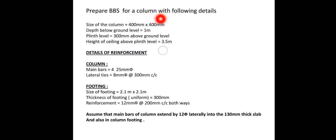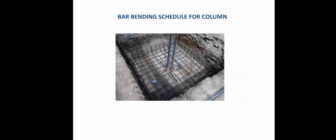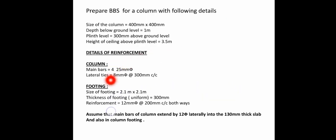The size of the column is 400mm × 400mm — same width and depth, so it's a square column. For the column reinforcement, there are main bars and lateral ties. There are 4 main bars of 25mm diameter. The lateral ties are 8mm diameter at 300mm center to center. You can see this in the drawing — 4 main bars of 25mm dia and lateral ties of 8mm dia at 300mm c/c.